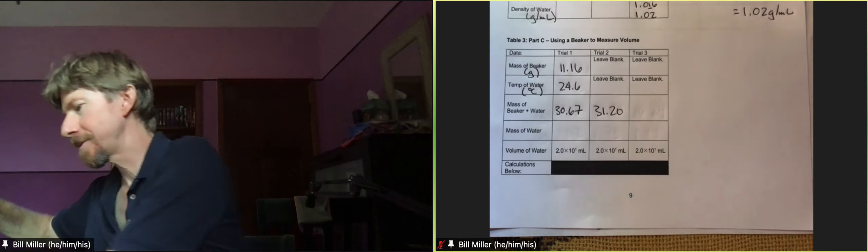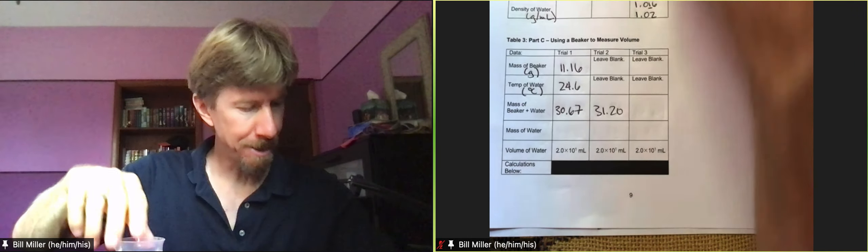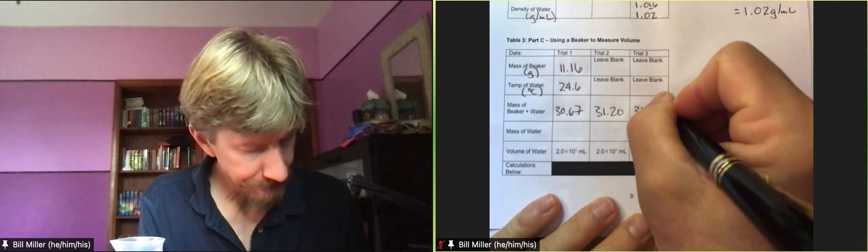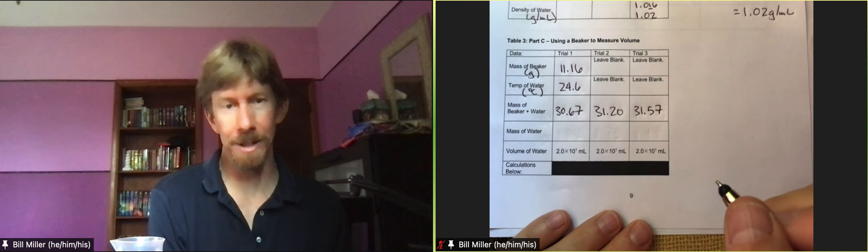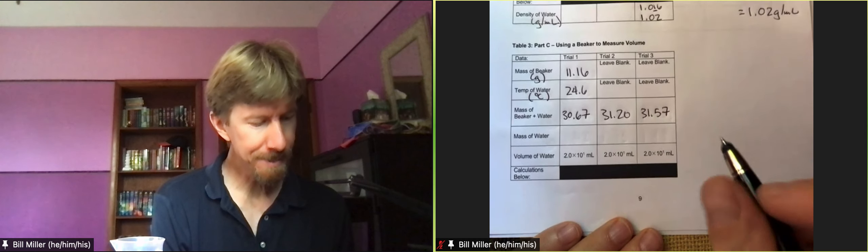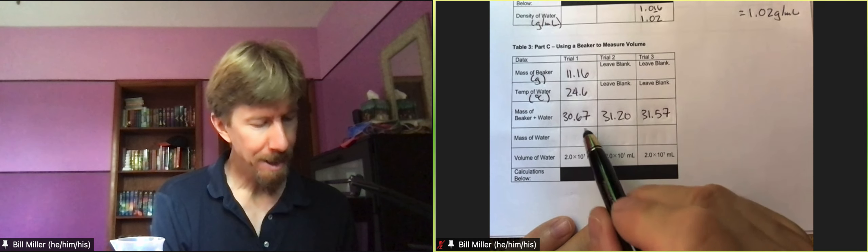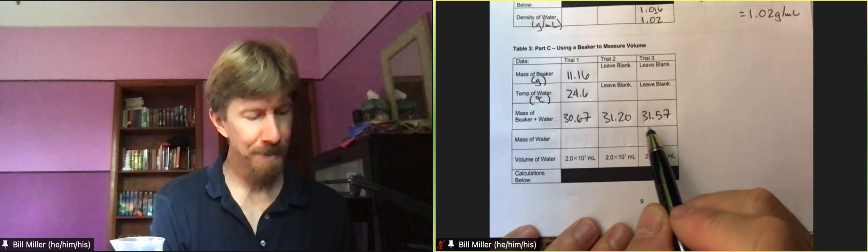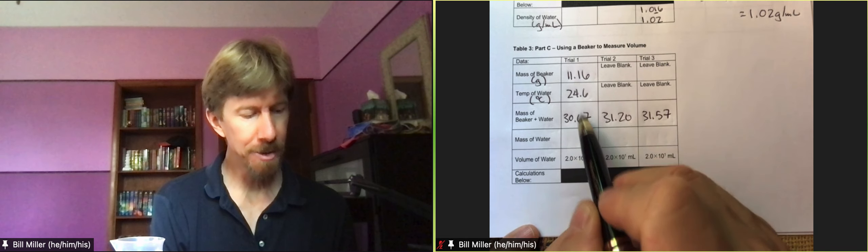I think that's it for the measurements. So I'm going to put it over there. 31.57. If you forget it, just put it back on the scale. That's fine. Now, all three of these are going to be done the same way as table 2. You emptied it each time, so you're going to subtract off the 11.16.